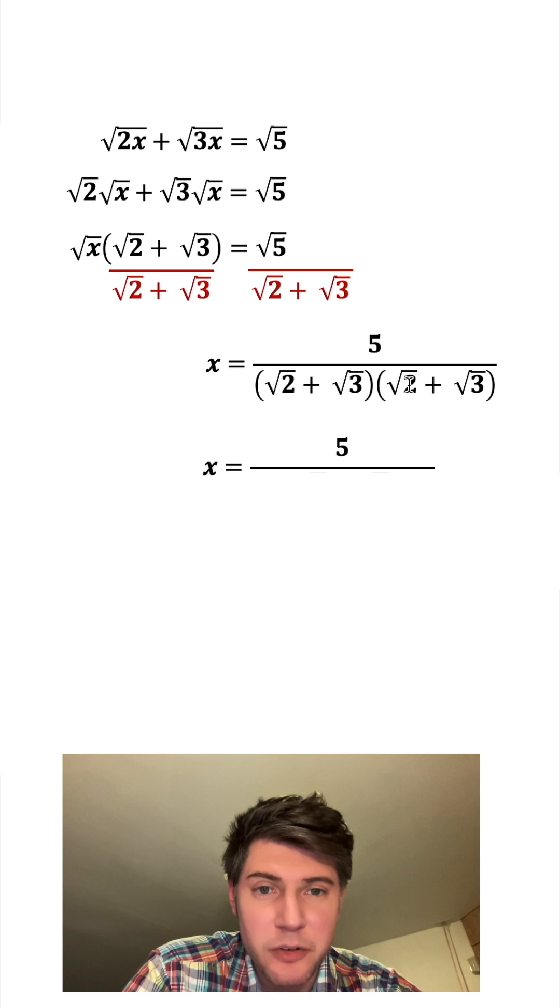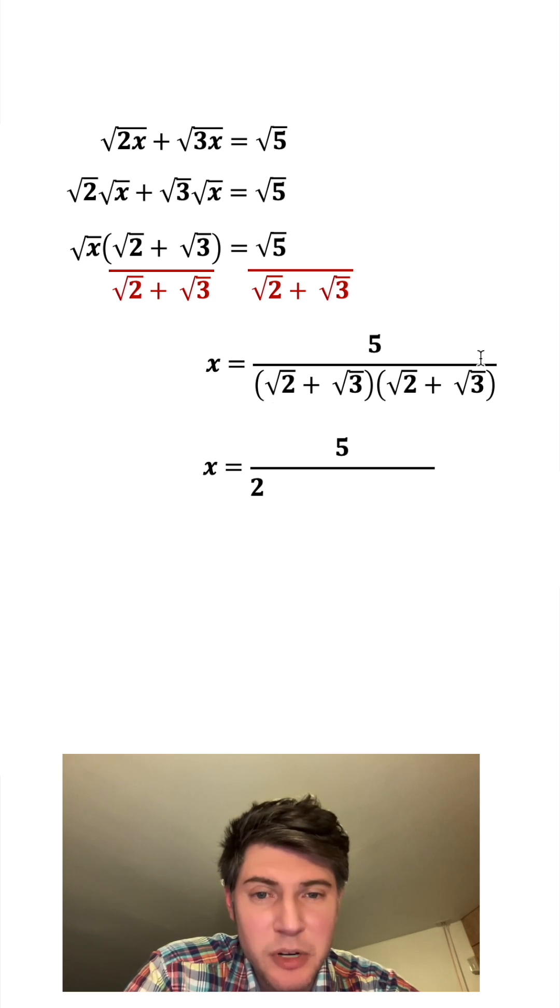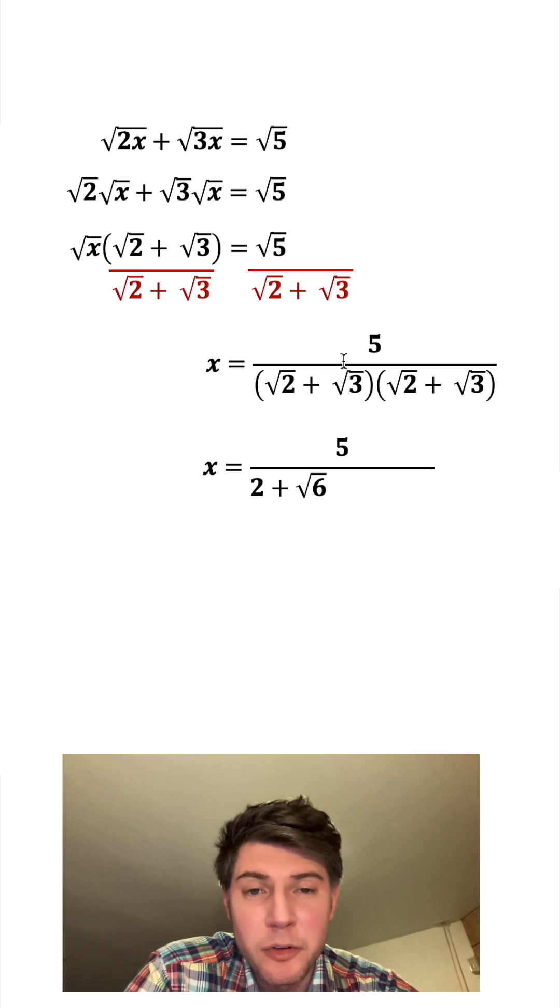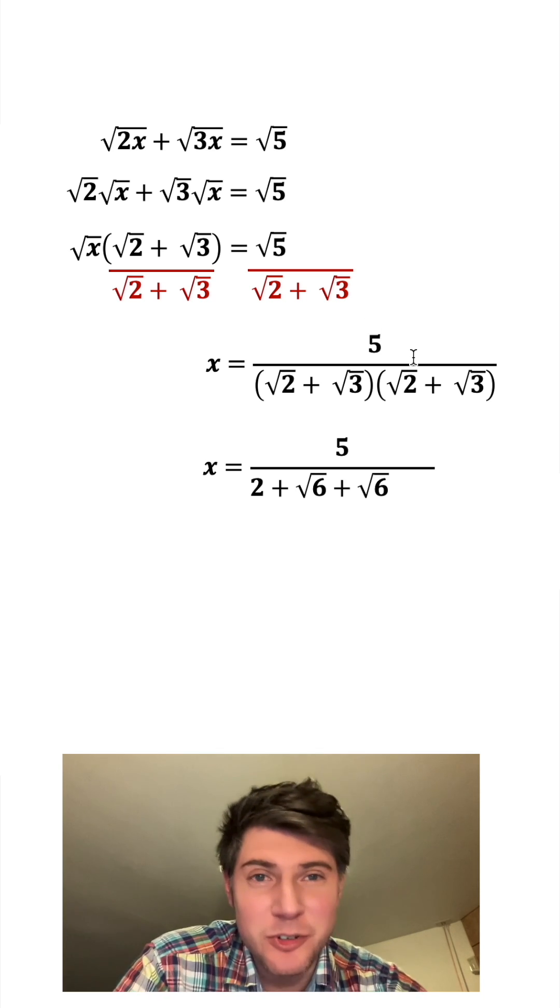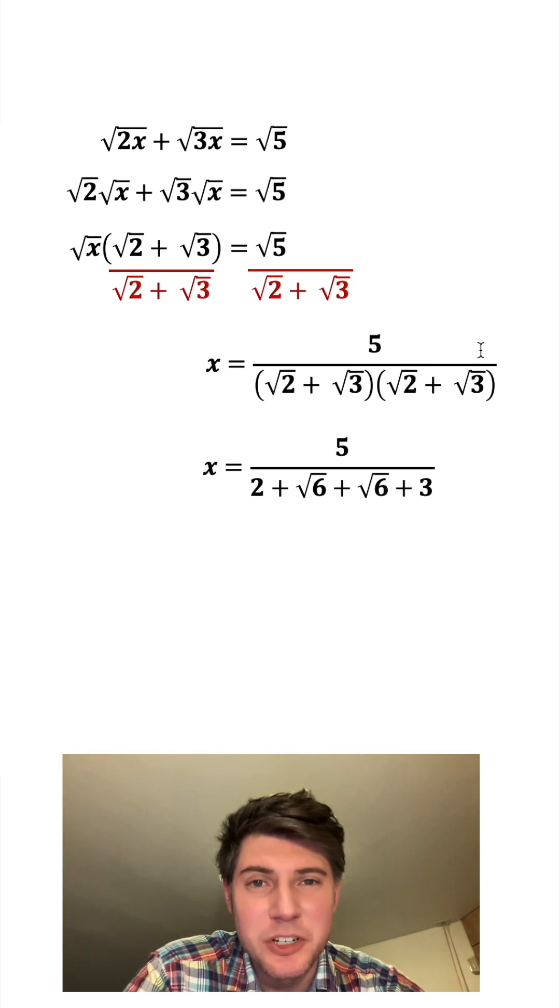We have the square root of 2 times square root of 2, which is 2. We have square root of 2 times square root of 3, which is square root of 6. We have square root of 3 times square root of 2, which is also square root of 6. And then we have square root of 3 times square root of 3, which is 3.